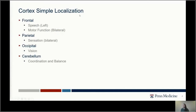For simple localization, we can look at which lobes do what. The front of the brain is primarily responsible for speech — usually the left side, though in about 10 to 15% of people the right side handles speech. The front of the brain is also responsible for motor function, controlling movement and strength in the arms and legs.